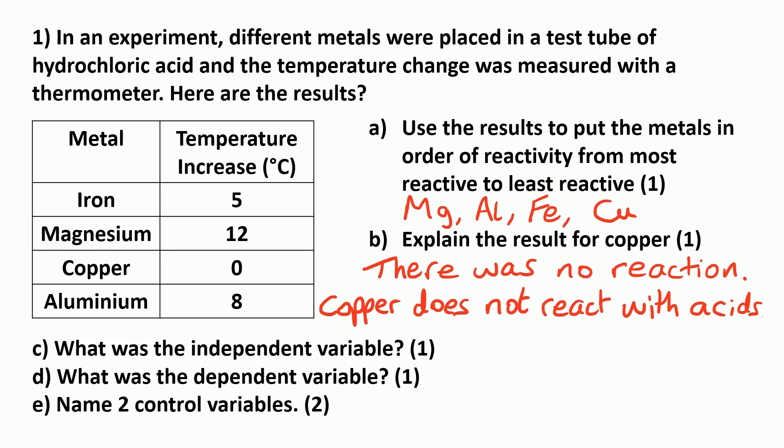The next questions are all about the variables, so have a think about that first. So the independent variable is the one that you change, so in this case it's the type of metal.